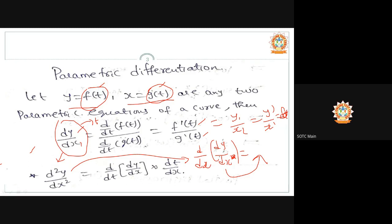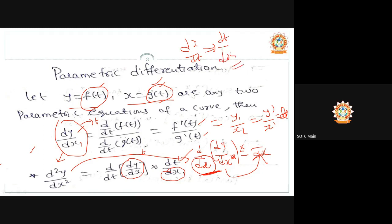Since dy/dx is a function of t, we differentiate it with respect to t. Then we need dt/dx — which is the reciprocal of dx/dt obtained from the second parametric equation. So d²y/dx² = [d/dt(dy/dx)] × (dt/dx). Be careful with this when solving second-order parametric differentiation.